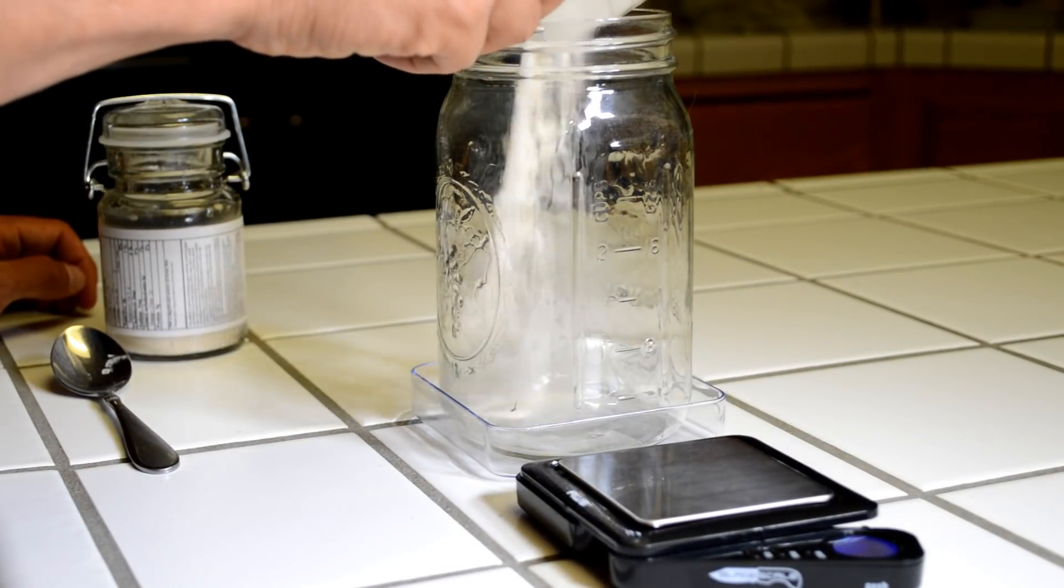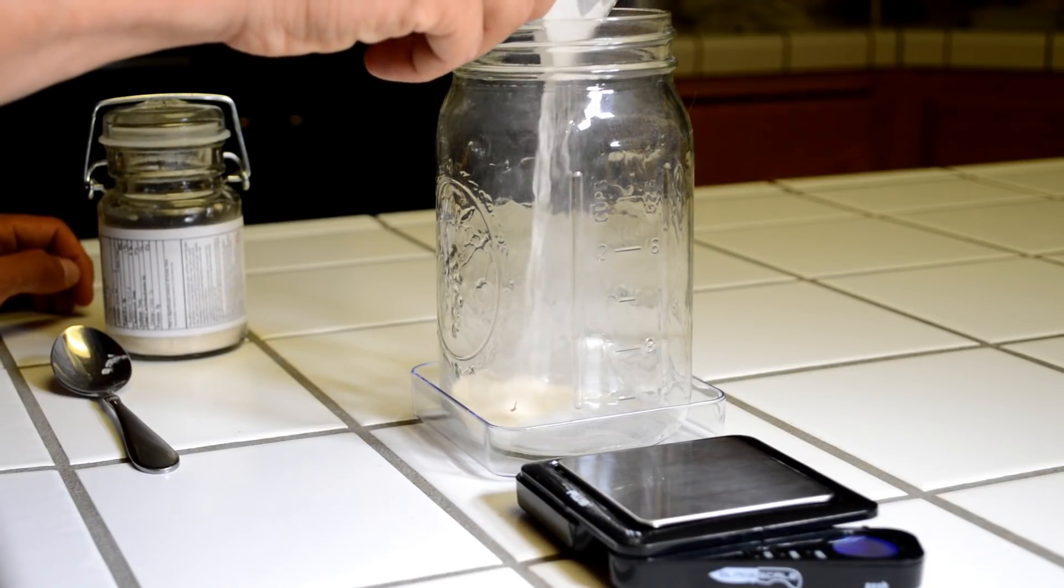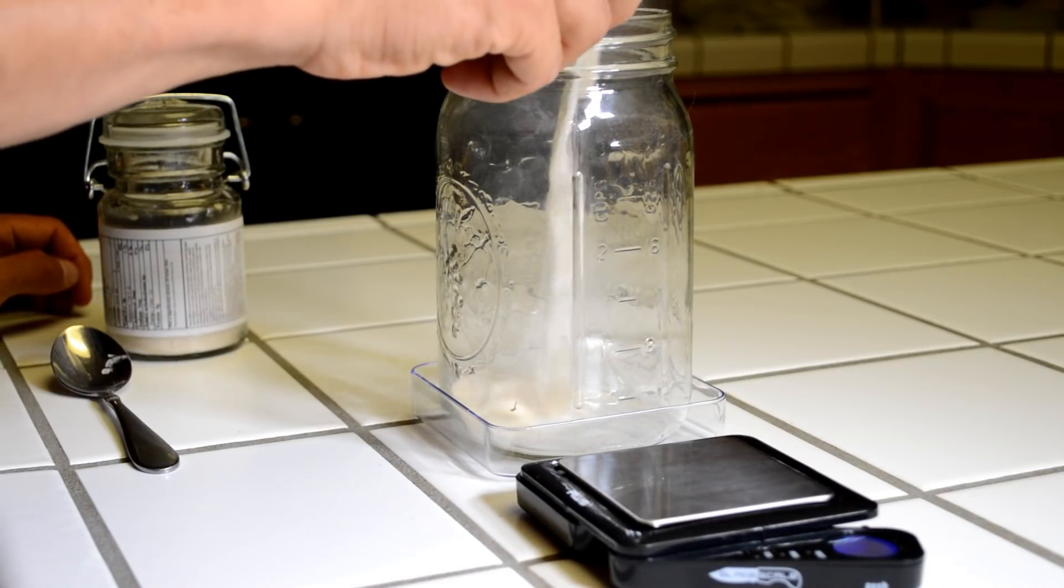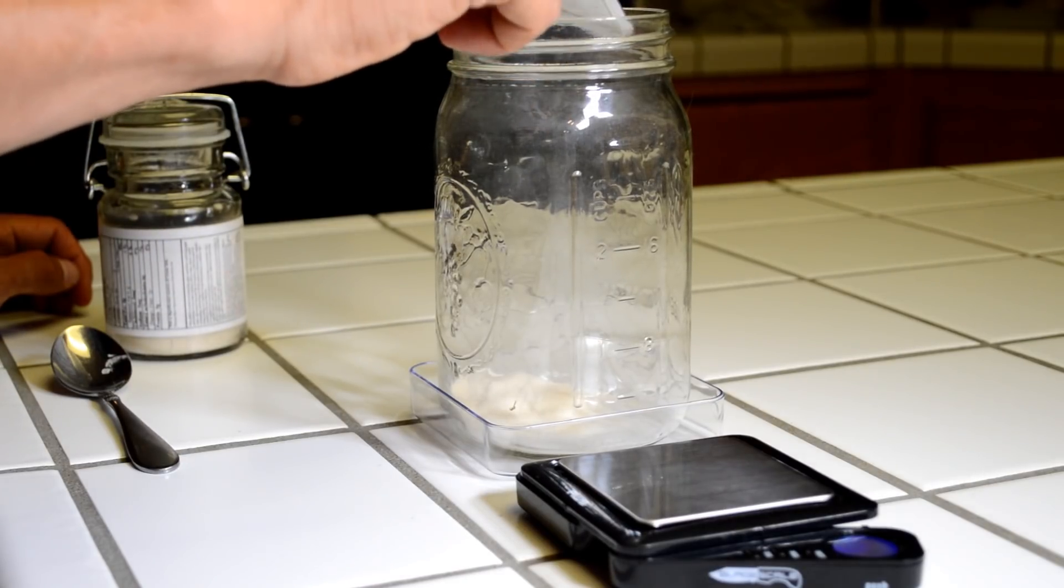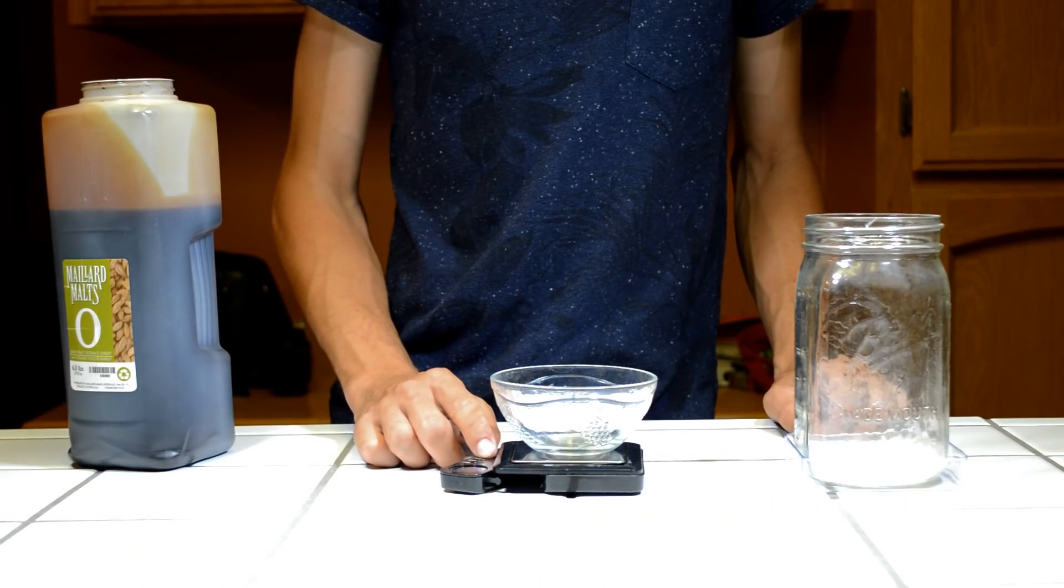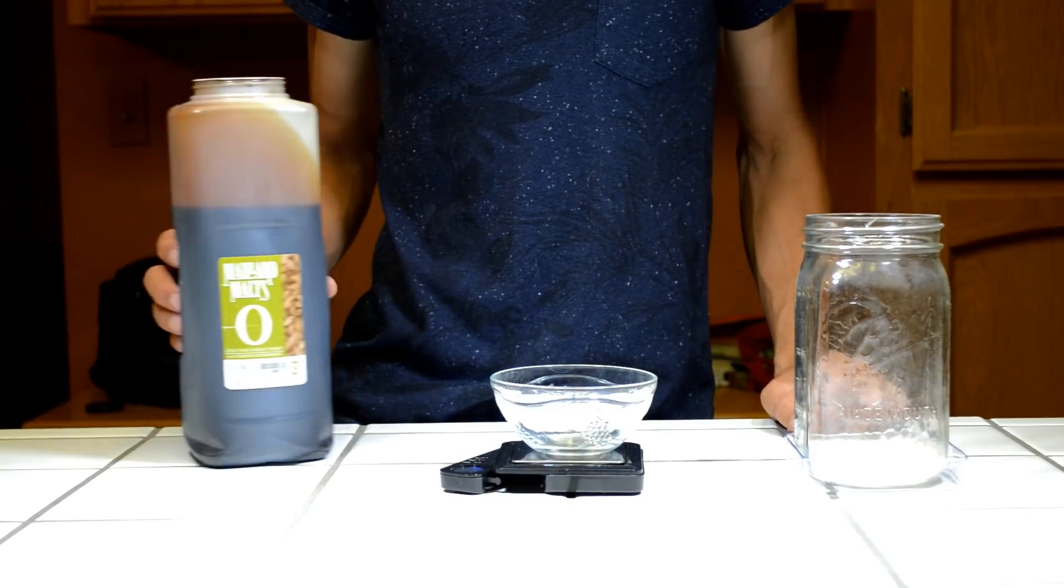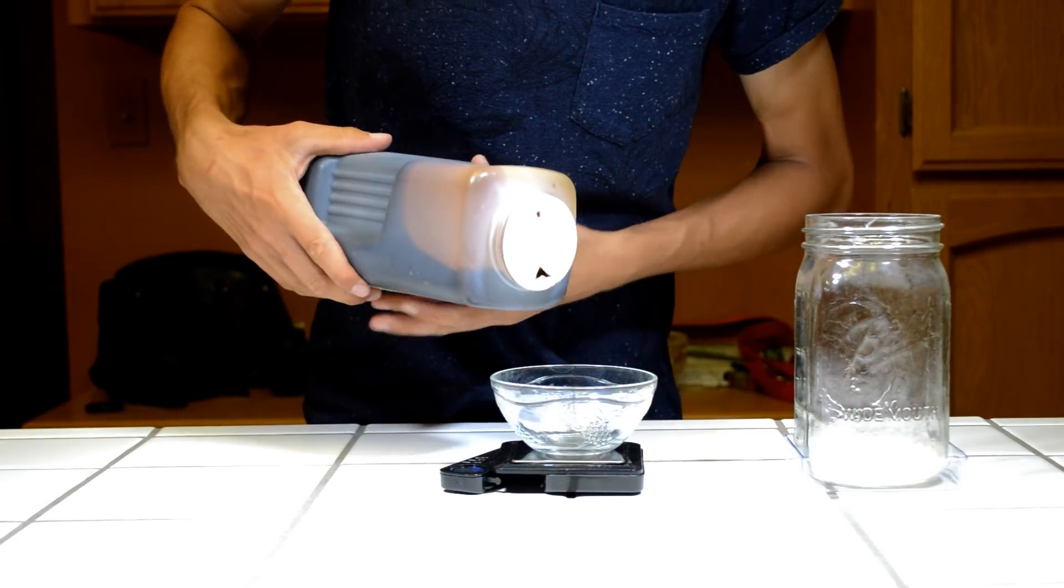Once you have weighed out your agar, go ahead and pour it in your mixing jar. Next, we will weigh out 10 grams of light malt extract. This will serve as the primary nutrition for the fungal cultures.